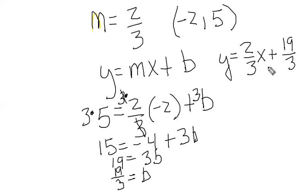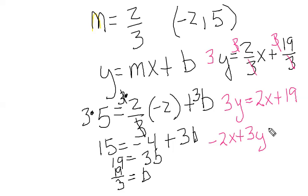Now if you wanted it in standard form, you would multiply everything by 3. Here the 3's would cancel out and you get 3y equals 2x plus 19, and then transpose the 2x to the other side: negative 2x plus 3y equals 19.